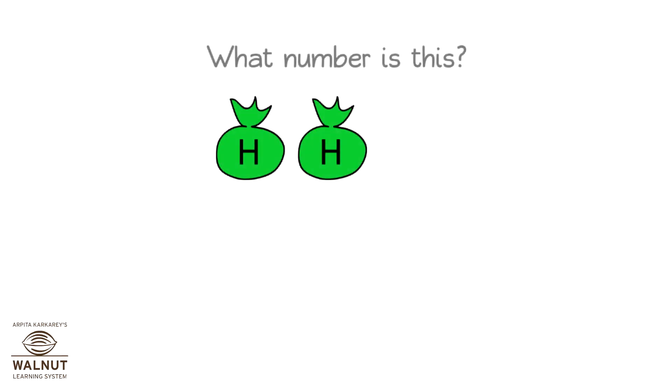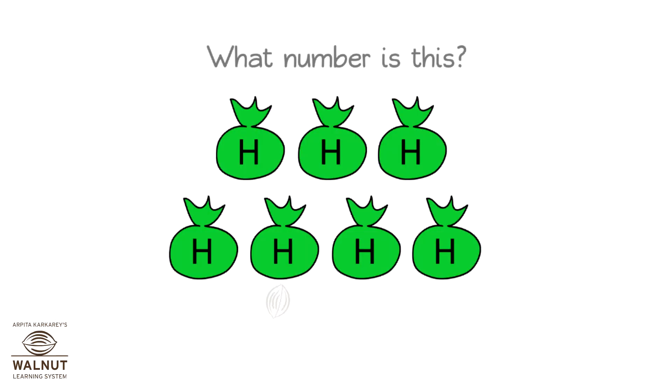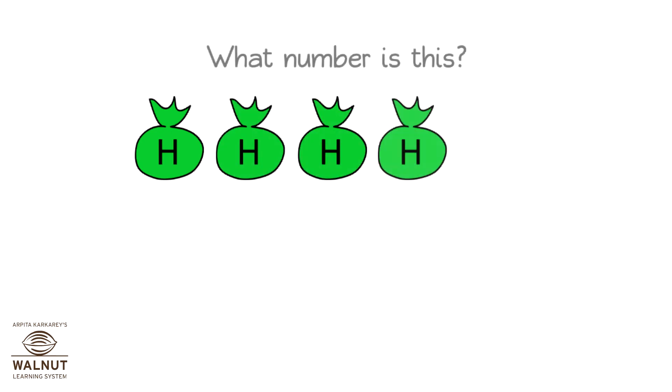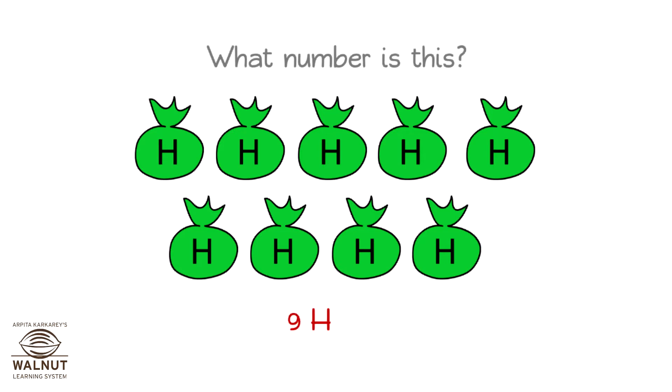What number is this? There are 3 hundreds here. So the number is 300. What number is this? There are 7 hundreds here. So the number is 700. What number is this? There are 9 hundreds here. So the number is 900.